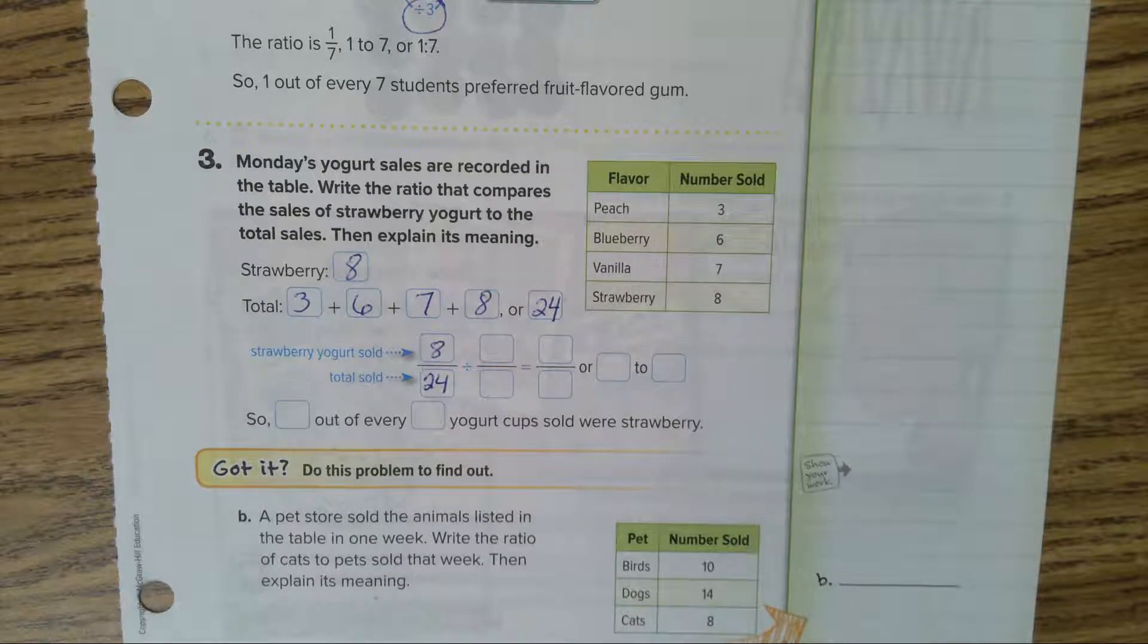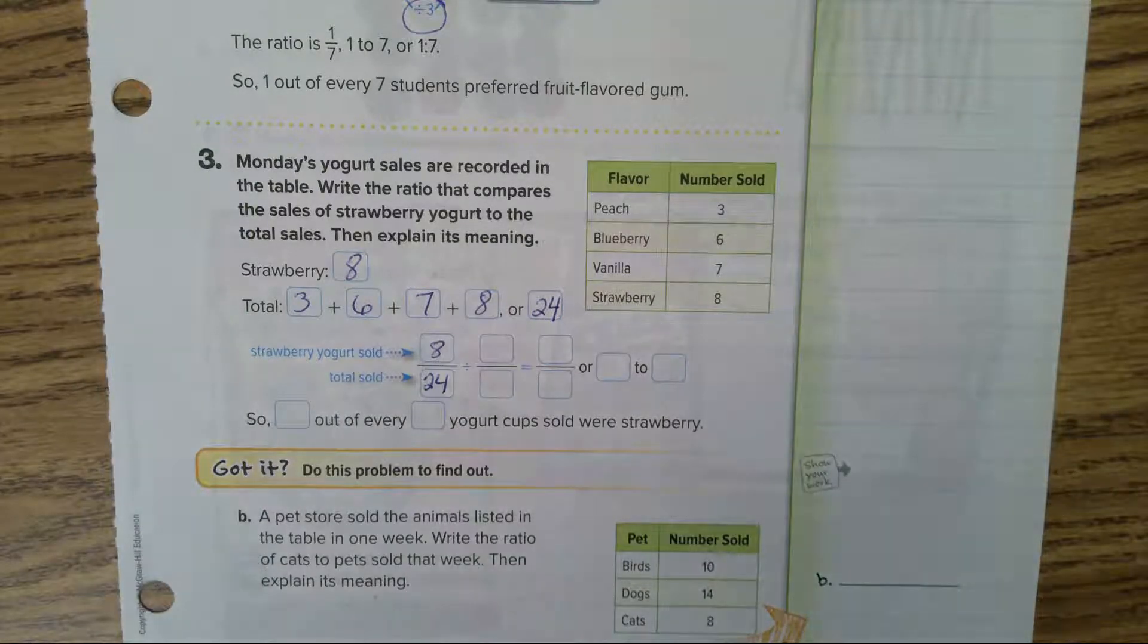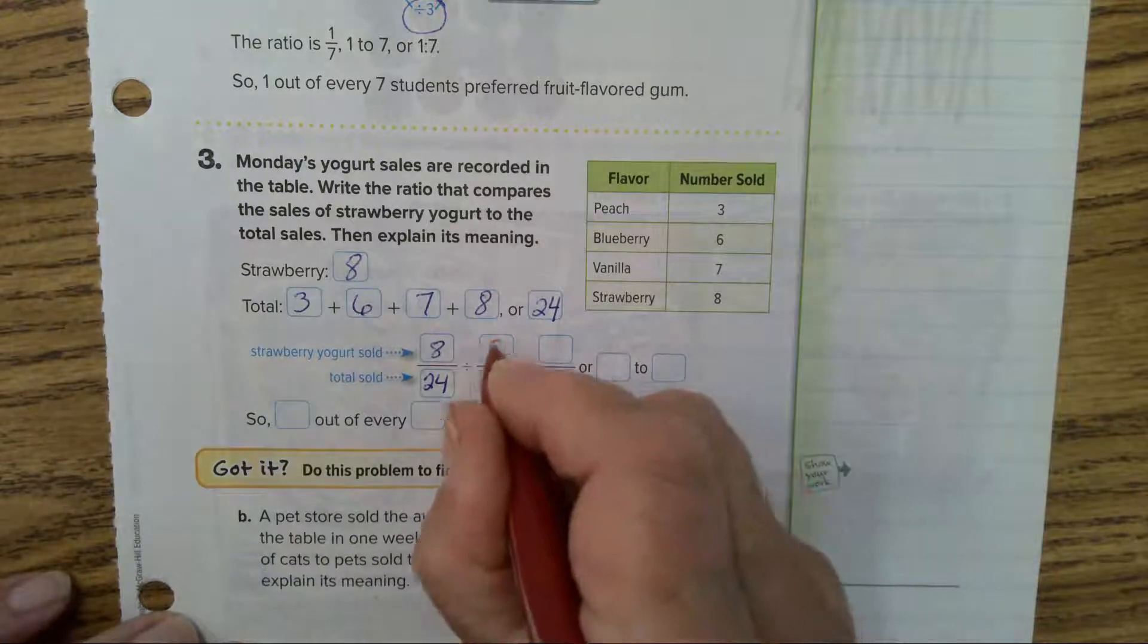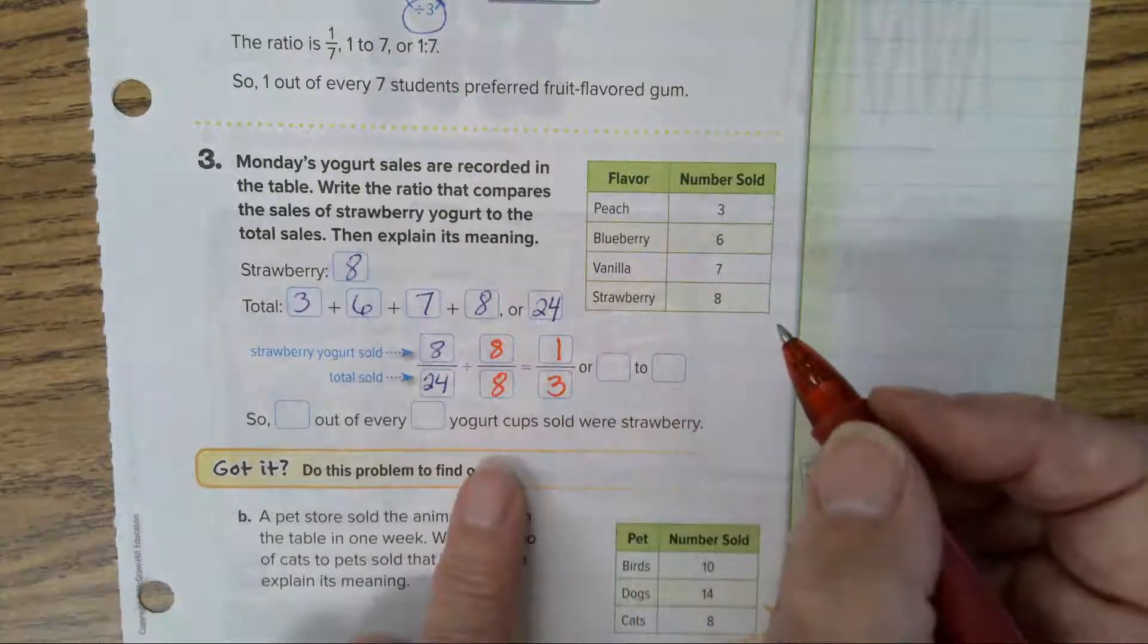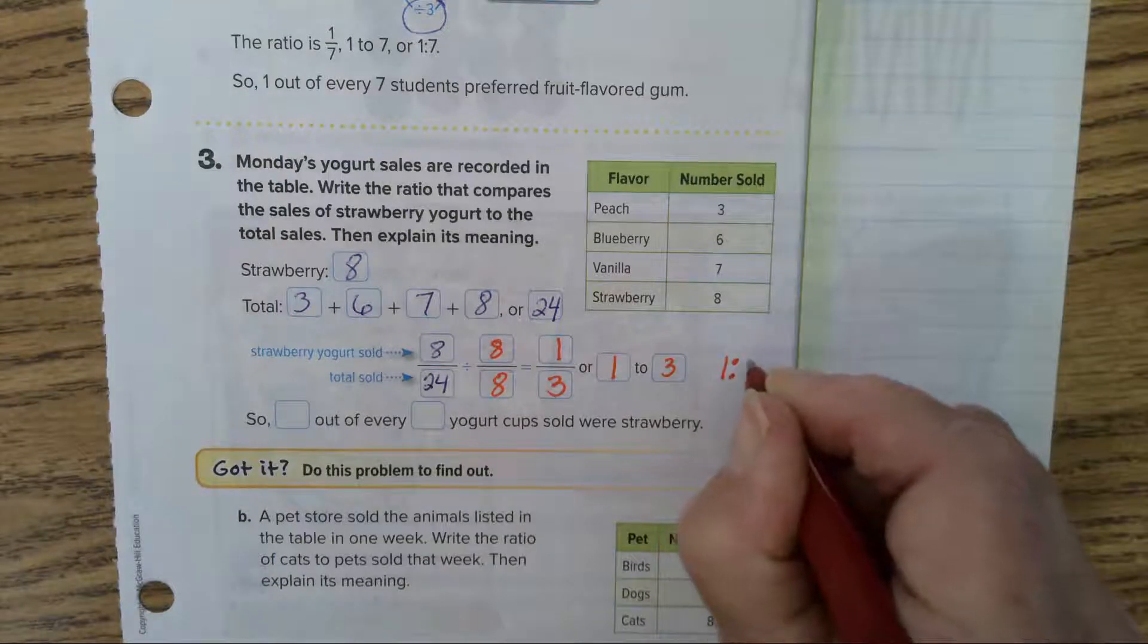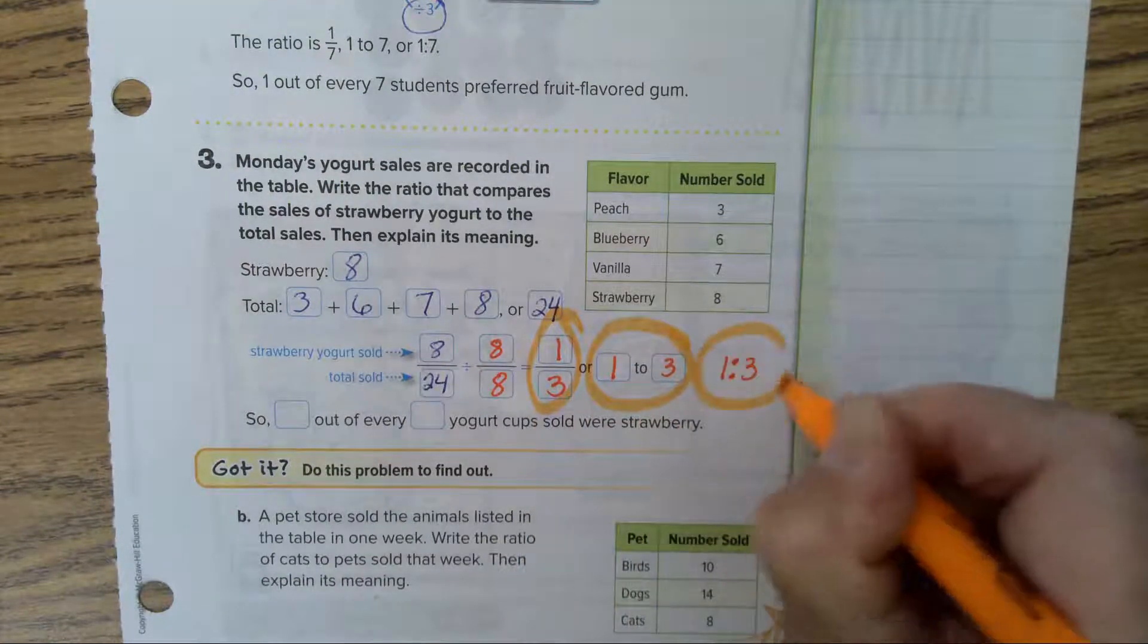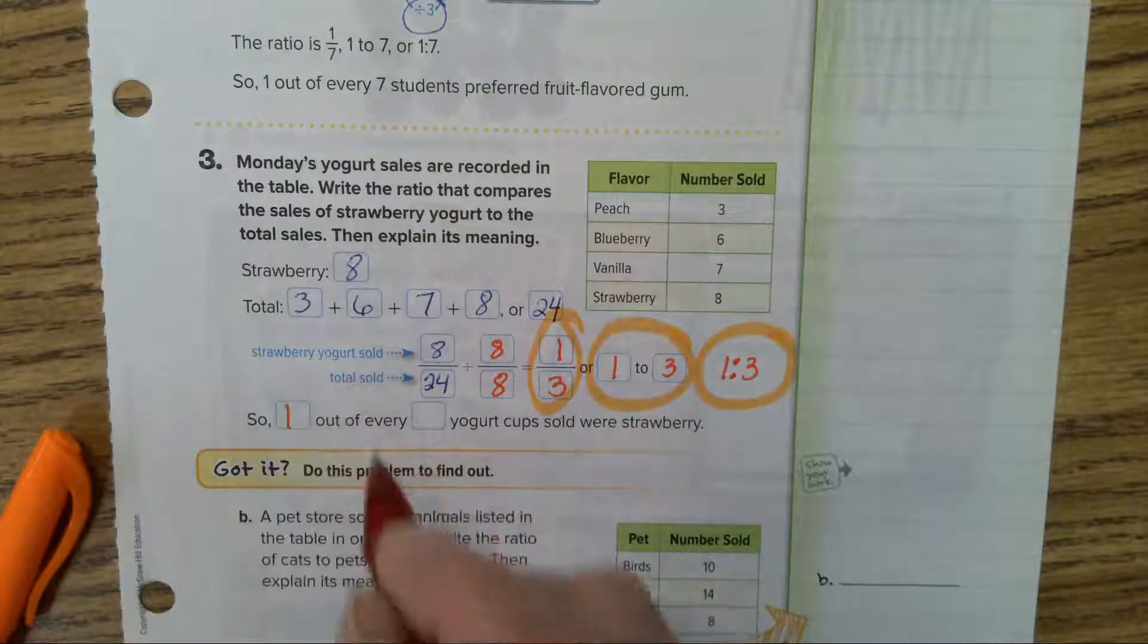Number 3 says Monday's yogurt sales are recorded in the table. Write the ratio that compares the sales of strawberry yogurt to the total sales then explain its meaning. Strawberry sold 8, total is 3 plus 6 plus 7 plus 8, which equals 24. So one out of every three yogurt cups sold were strawberry.